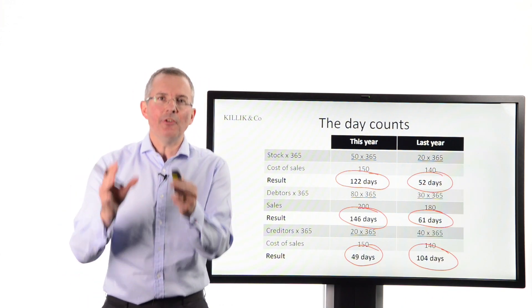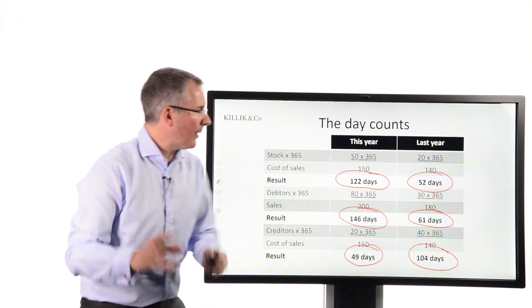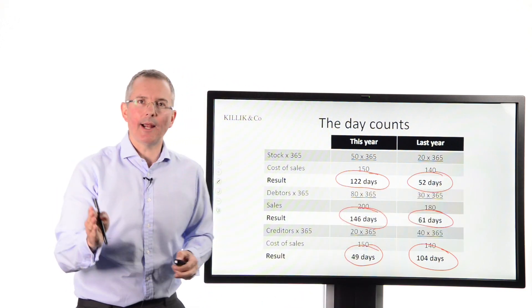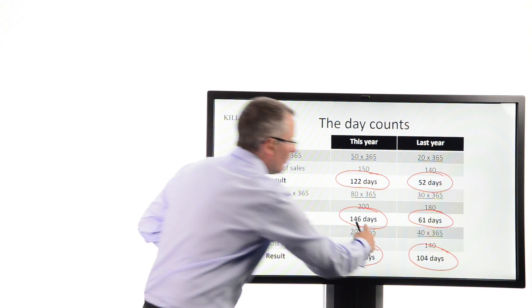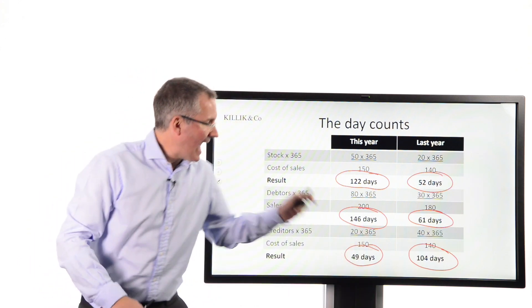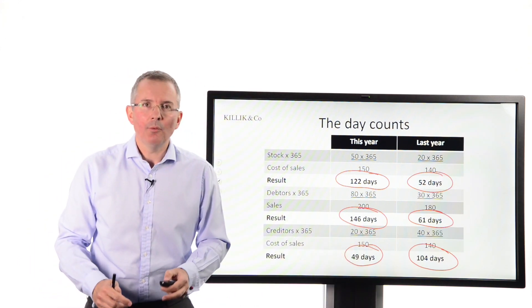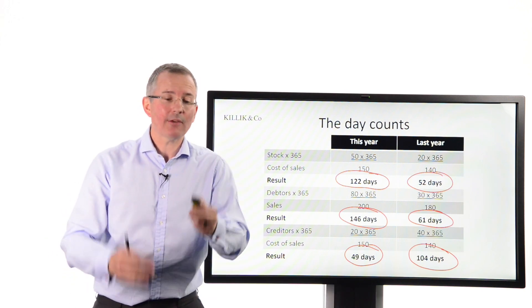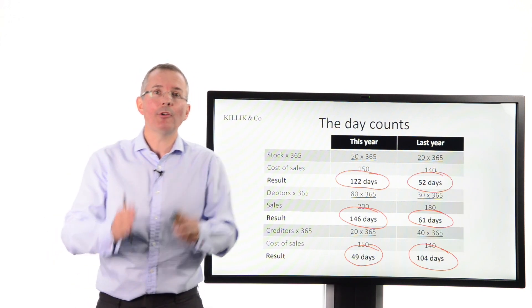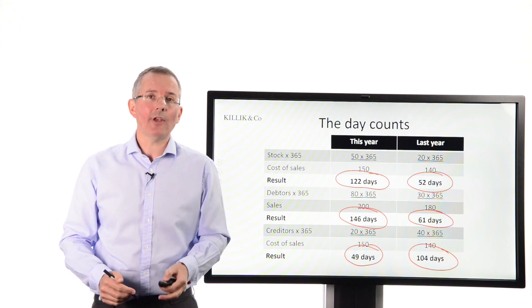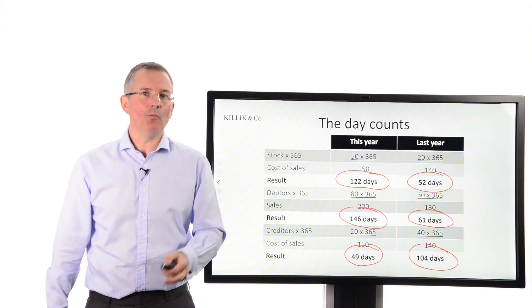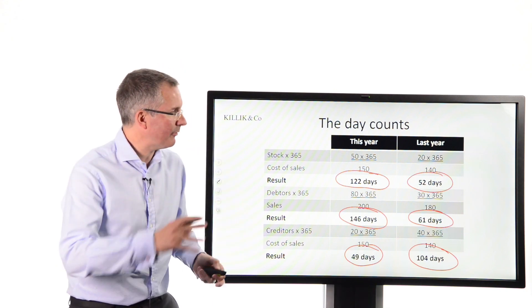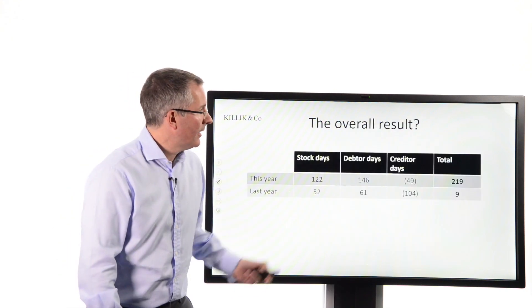Now, in cash flow terms, this is all bad news. Why do I say that? Because it's taking us much longer to turn stock around. It's taking us much longer to collect cash from customers. And worse than that, we've actually changed the way it looks like we pay our suppliers. That's all cash flow negative. So the expansion I pointed to at the start of this video is coming at quite a price in working capital terms. Enough of a price to make me nervous. Because let's put this all together. And what do we get? Here it is.